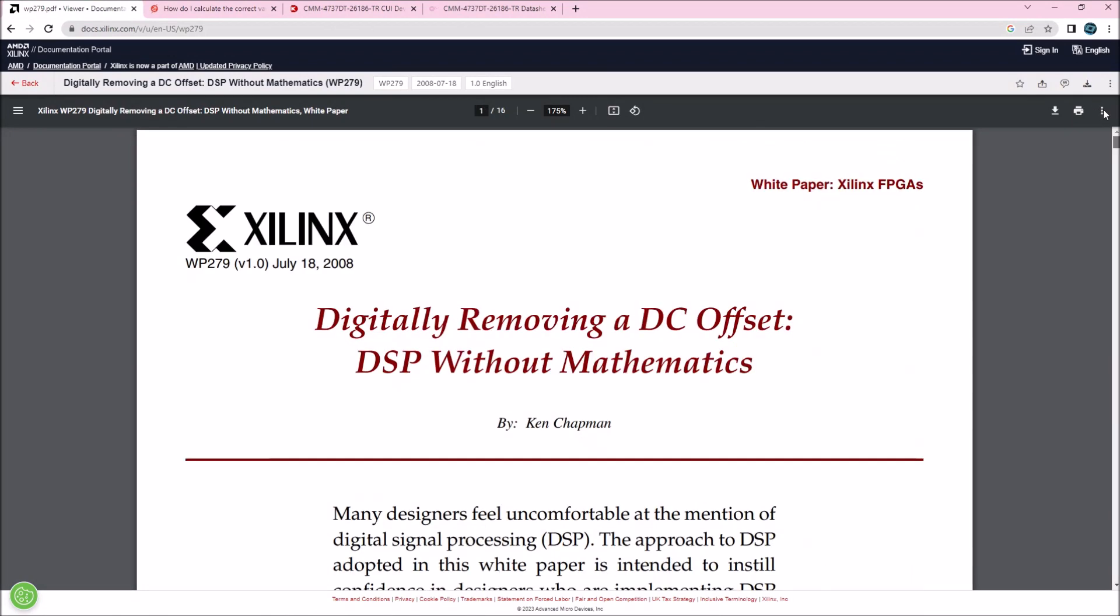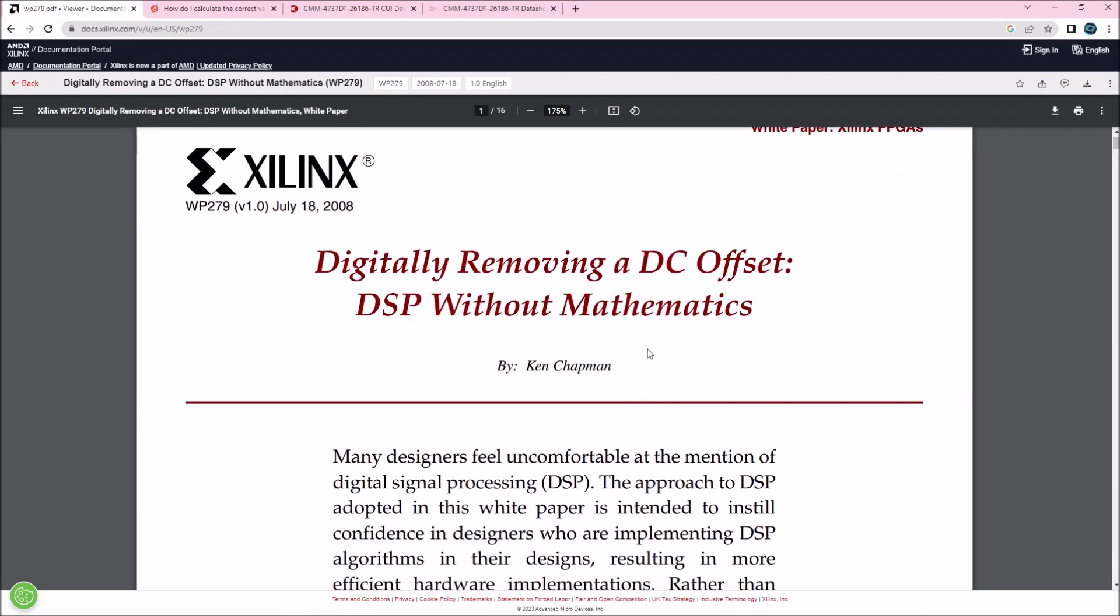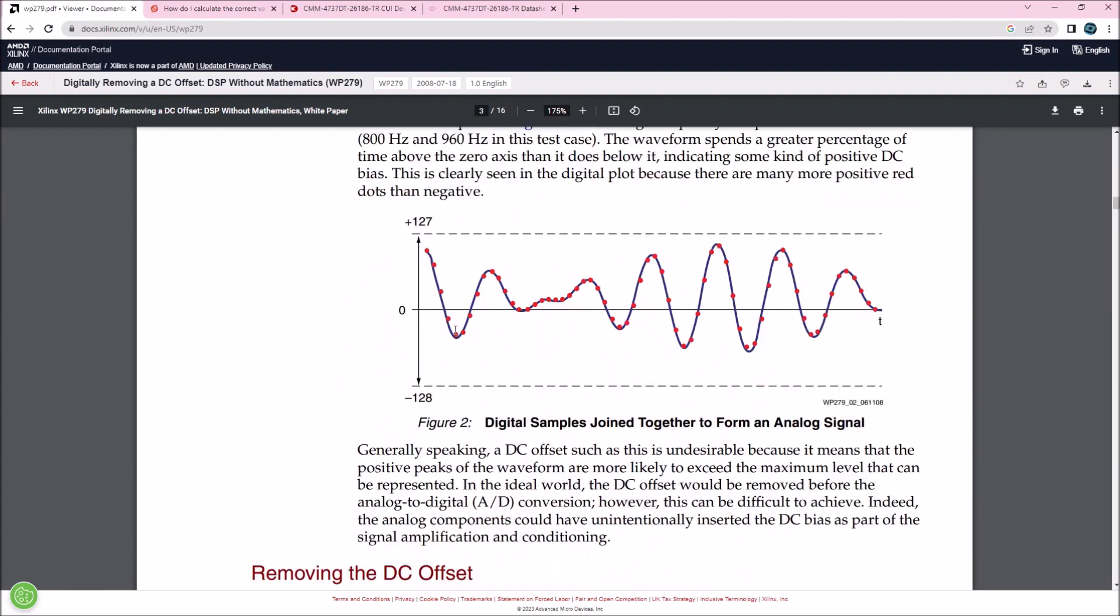There's a document on the internet written by Xilinx by Ken Chapman. He described here a method of removing the DC offset. This is a signal with the DC offset, right? In red are the samples, the discrete samples. You see there is a slight positive shift here.